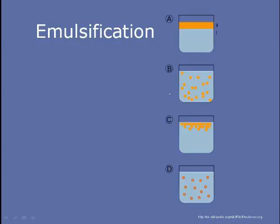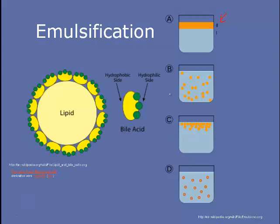Here's how emulsification works. If oil is floating on top of water, the two won't mix because oil is hydrophobic. But if you add an emulsifier, it has both a hydrophobic side attracted to lipids and a hydrophilic side attracted to water — just like soaps and bile. This forms structures that allow the oil to disperse into the water. In our digestive system, this emulsification makes it much easier for digestive enzymes to break down fat by producing more surface area for the enzymes to work on.